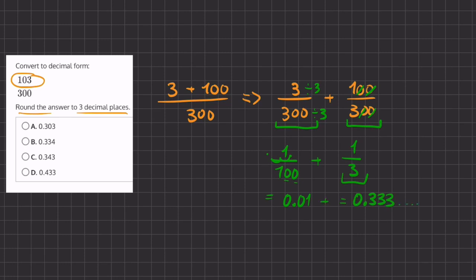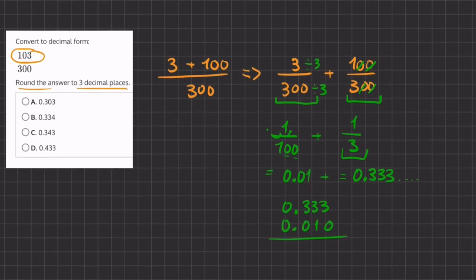And now we're just going to be adding these two decimals. So we're going to add another 0 for just the sake of the problem.